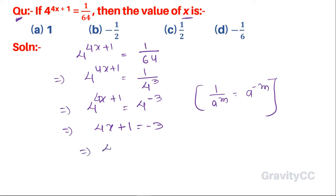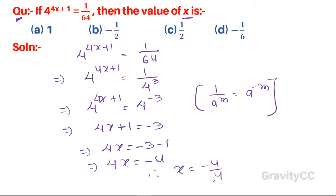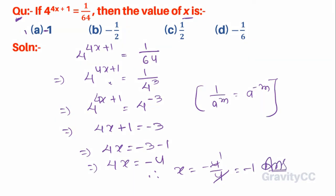This implies 4x equals minus 3 minus 1, so 4x equals minus 4, therefore x equals minus 4 upon 4, which gives x equals minus 1. So option A is the correct answer.